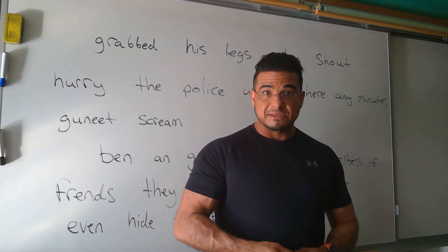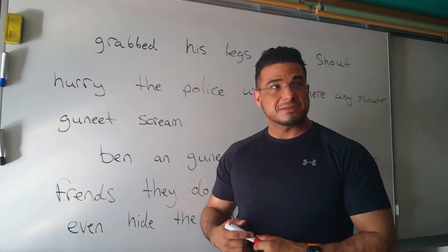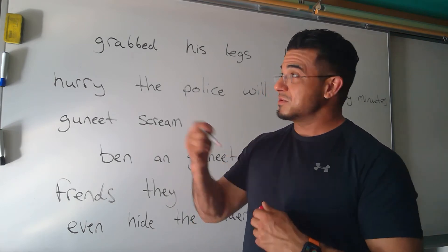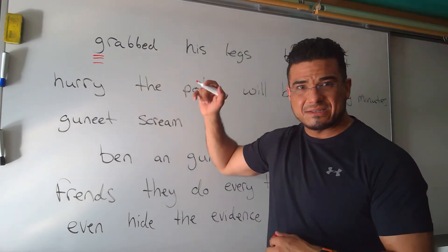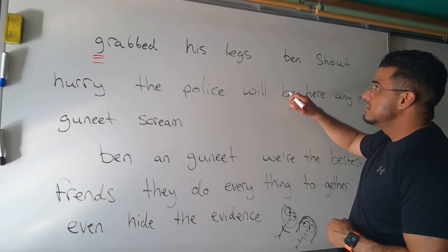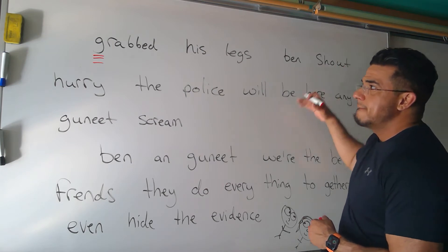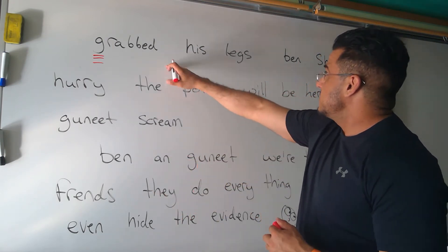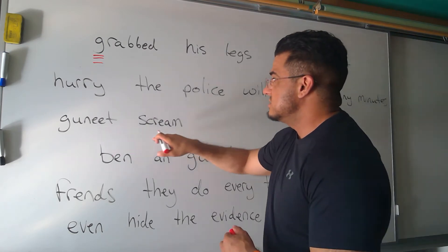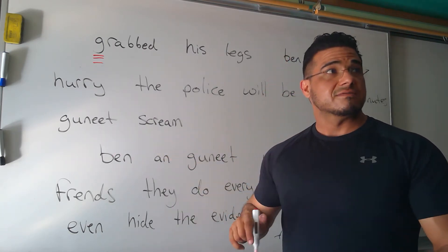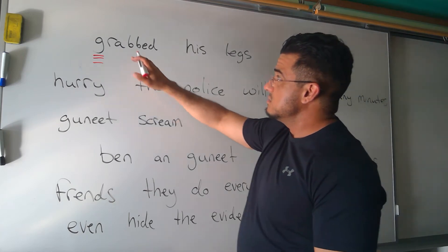Okay, I am moving and talking so I'm guessing you have resumed the video. We will now correct it together. Let's start at the beginning of the sentence — as we always should, a sentence always starts with a capital letter, which in this case it is not. So we have "grabbed" — past tense. This verb is in past tense: grabbed his legs. Then "Ben shout" — let's keep going. Grabbed his legs, Ben shout, hurry, the police will be here any minutes, Goonie scream. It sounds like we have two sets of dialogue occurring here, the first of which is attributed to Ben as he is the one who is shouting.